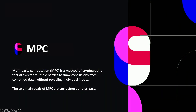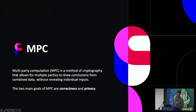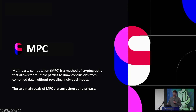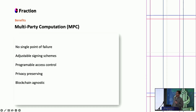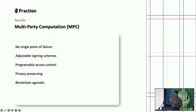That brings us to MPC. MPC is a keyless solution, and so is account abstraction — both changing the way we have access to wallets. In short, multi-party computation is a method of cryptography that allows multiple parties to draw conclusions and combine data without revealing inputs. The two main goals are correctness and privacy. Correctness ensures that outputs produced by the algorithm are correct and as expected. For privacy, it ensures that secret data of any party is not leaked to any other party. For MPC wallets, one key point is there's no single point of failure — multiple signatures are required to execute a transaction, happening off-chain as a second layer of cryptography.